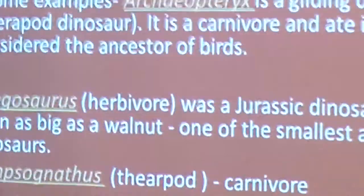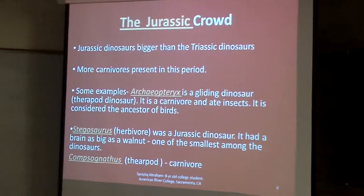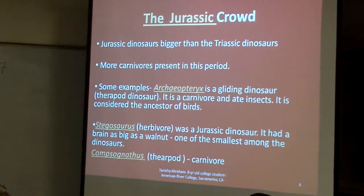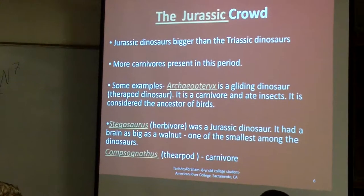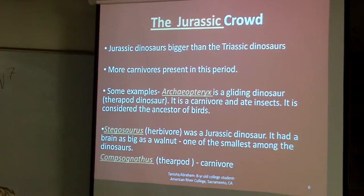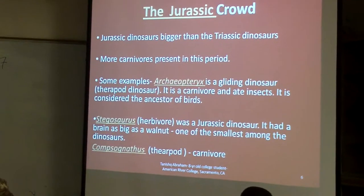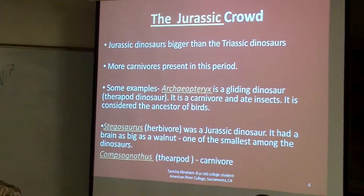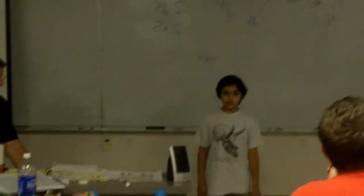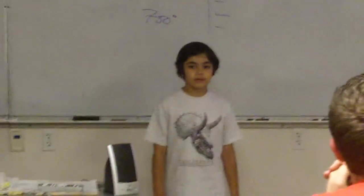The Jurassic dinosaurs were bigger than the Triassic dinosaurs. And there were more carnivores than the Triassic dinosaurs had. Some examples of Jurassic dinosaurs are Archaeopteryx. Archaeopteryx is actually a gliding dinosaur, and it can glide. It's a meat eater and it's a theropod. A theropod is a dinosaur that can actually walk on two legs, and most theropods are meat eaters.